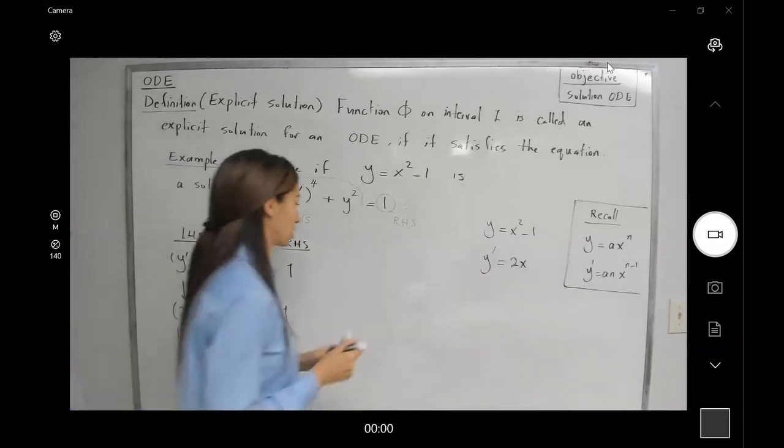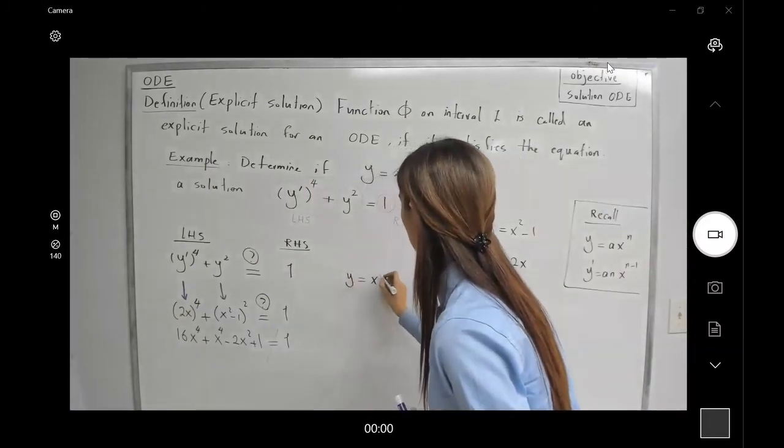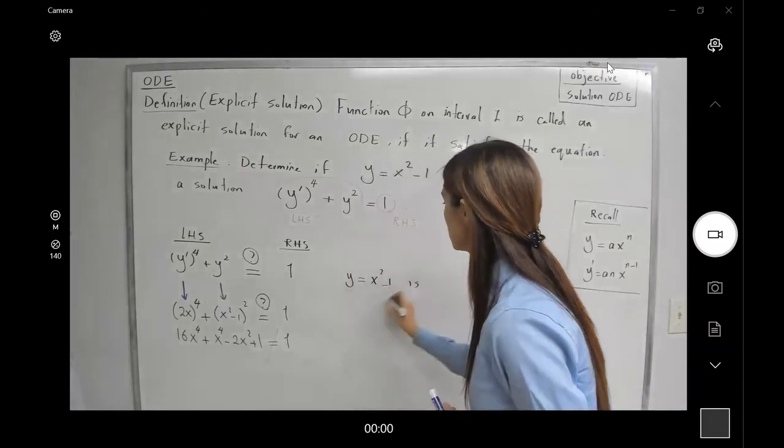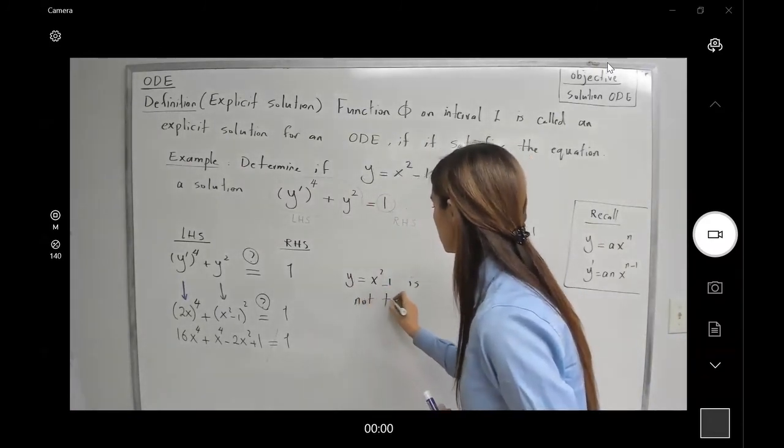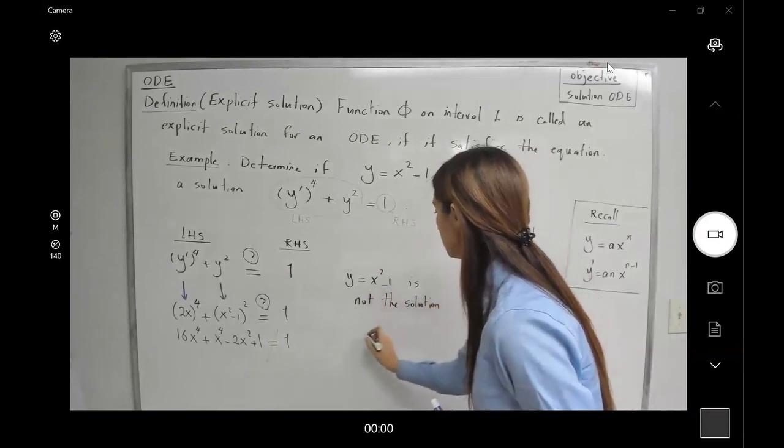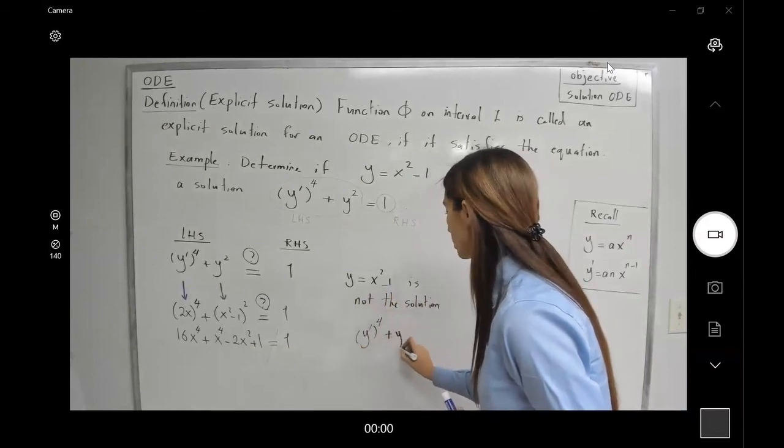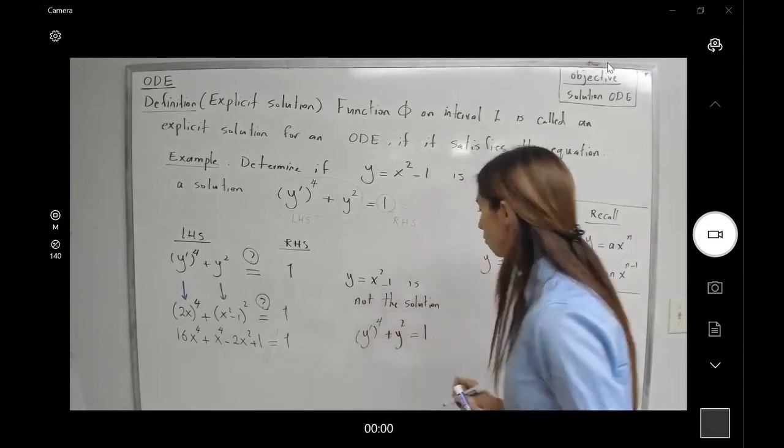So what is the conclusion? The conclusion is y = x² - 1 is not the solution to the ODE (y')⁴ + y² = 1.